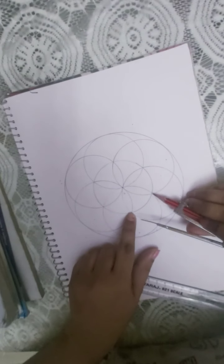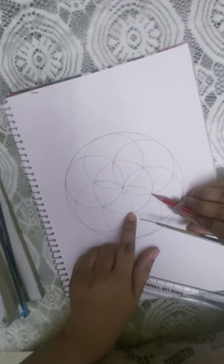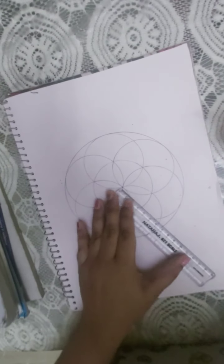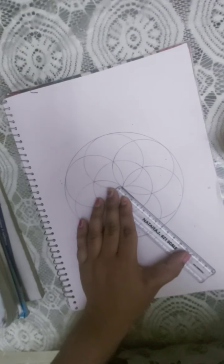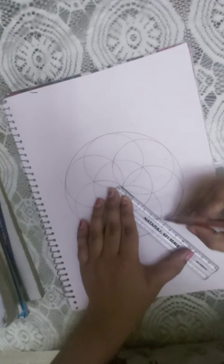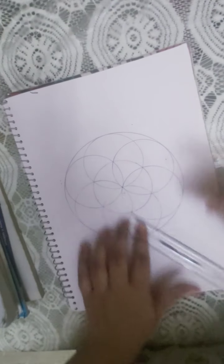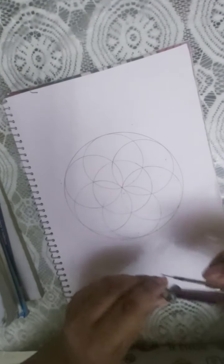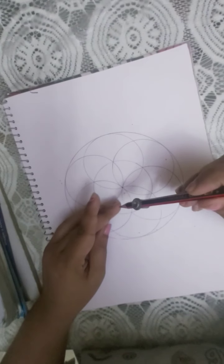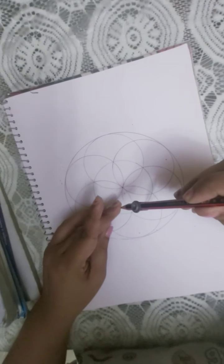I am using a scale and I am marking the middle point. This is my middle point. Now I am going to again make the circle from this point.